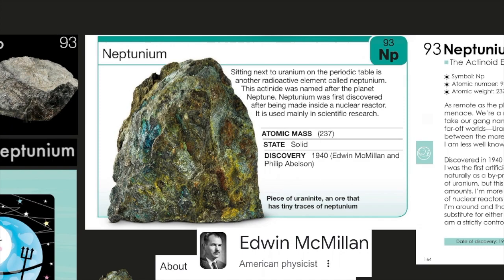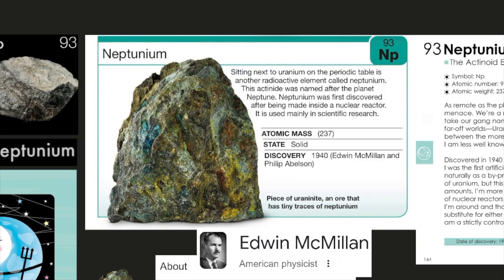Neptunium, element number 93. Sitting next to uranium on the periodic table is another radioactive element called neptunium. This actinide was named after the planet Neptune. Neptunium was first discovered after being made inside a nuclear reactor. It is used mainly in scientific research. Its atomic mass is 237. It stays as a solid. Its discovery was in 1940 by Edwin McMillan and Philip Abelson. Here we have a piece of uraninite, an ore that has tiny traces of neptunium.